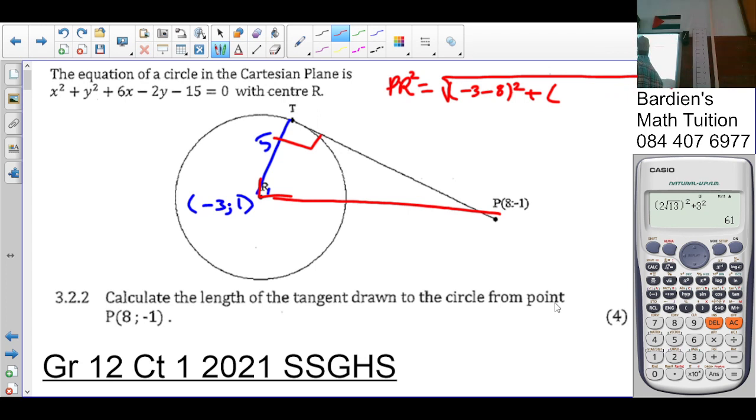So it's going to be negative 3 minus 8 squared plus 1 minus minus 1 squared. Why am I doing this? So that I can apply this here to my Pythagoras again to calculate the length of tangent TP.